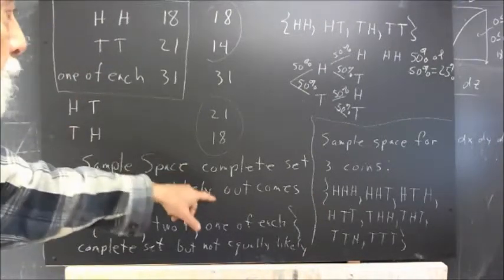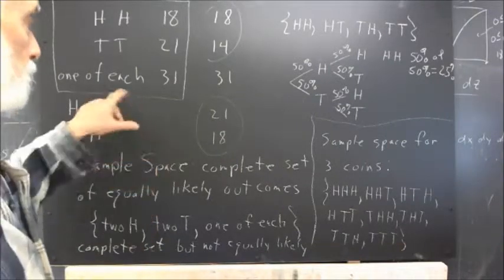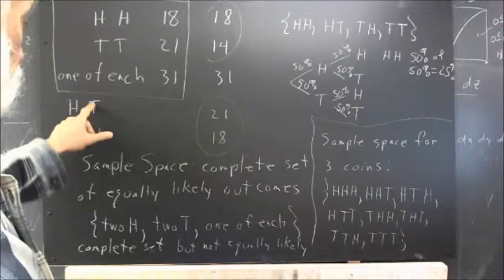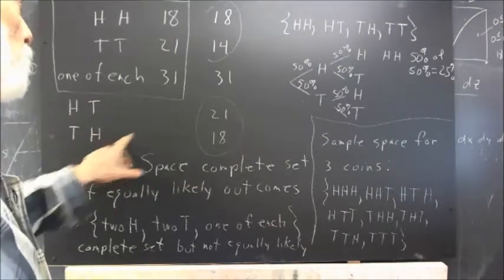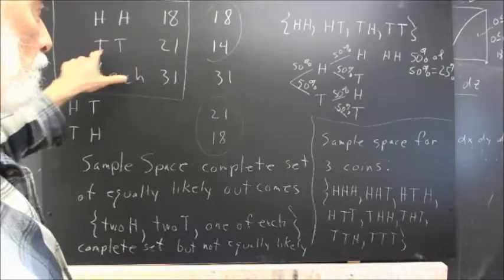When we tallied these results, this is what we got. We counted 21 occurrences of heads-tails, 18 of tails-heads, to go with 18 of heads-heads and 14 of tails-tails.